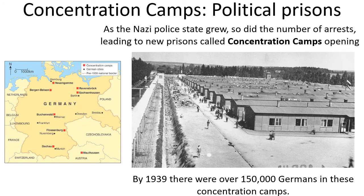So obviously, what happened to all the prisoners that the SS arrested, that the Gestapo arrested, that the SD discovered? As the Nazi police state grew, so did the number of arrests, leading to new prisons called concentration camps opening. You've got to see these as political prisons. The people inside them weren't criminals — they weren't murderers, they weren't thieves. They were people who were enemies of the state: people who produced pamphlets or newspapers, they were socialists, they were communists, they were undesirables in the community, they were foreigners, they were Jewish. And by 1939 there were over 150,000 Germans in these concentration camps, and you can see on the map they're dotted all over Germany from north to south.